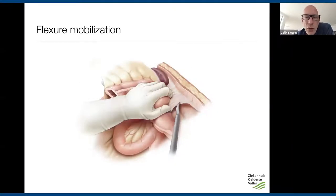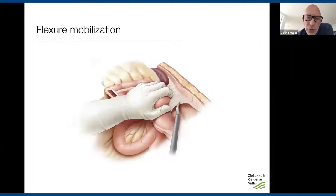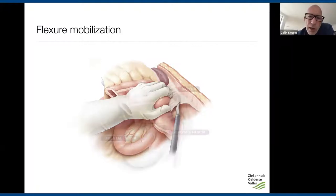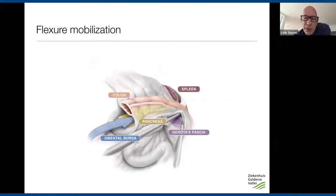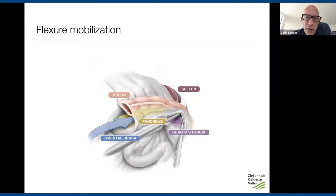In traditional open surgery, flexure mobilization was started by pulling the bowel to medial with the left hand and cutting adhesions with the right hand. This was often difficult — specifically in obese patients it was hard to get the surgical field into vision, and there was often pulling, tearing, and sometimes even spleen damage with bleeding. The laparoscopic approach is ideally suited for mobilization of the splenic flexure, which requires cutting all adhesions between the omentum, transverse colon mesentery, descending colon, pancreas, retroperitoneum, and lateral bowel wall.